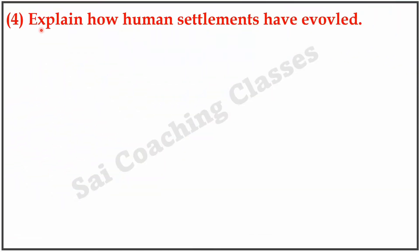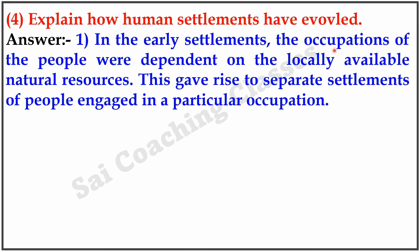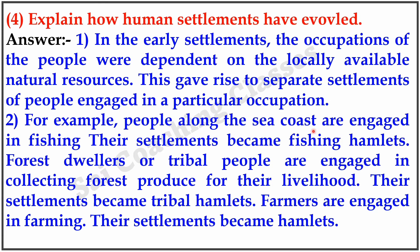Question 4. Explain how human settlements have evolved. Answer: In the early settlements, the occupations of people were dependent on locally available natural sources. These gave rise to separate settlements of people engaged in particular occupations. For example, people along the seacoast engaged in fishing — their settlements became fishing hamlets. Forest dwellers or tribal people engaged in collecting forest produce for their livelihood — their settlements became tribal hamlets. Farmers engaged in farming, and their settlements became farming hamlets.